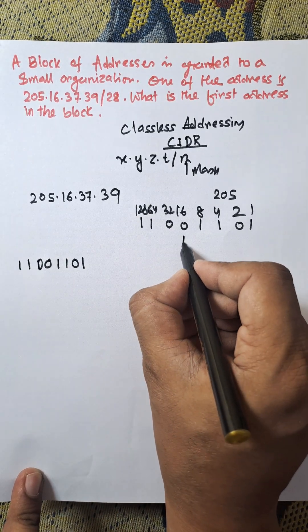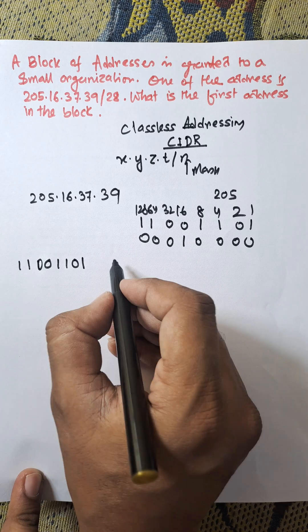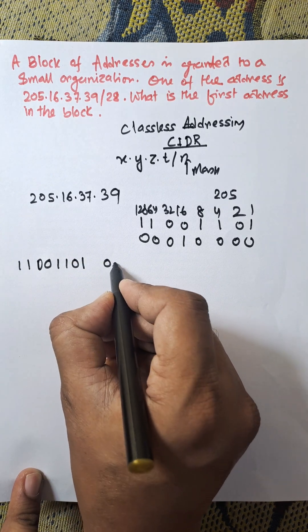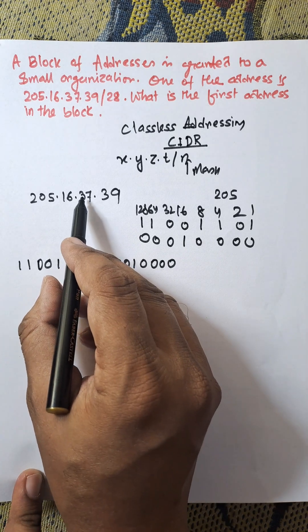Now next one is 16. 16 means this one is 1, remaining all are 0. The equivalent binary for 16 is 00010000.